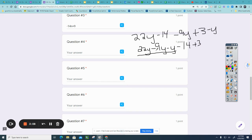I will combine all of this. So 22 minus 10 is 12y. Negative 14 plus 3 is negative 11. You will type that with no spaces, 12y minus 11.